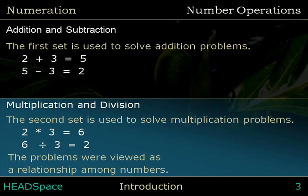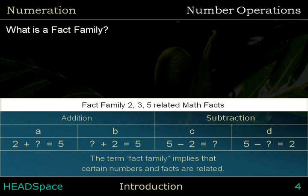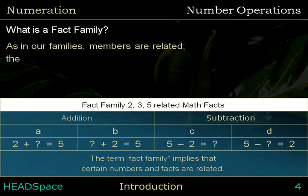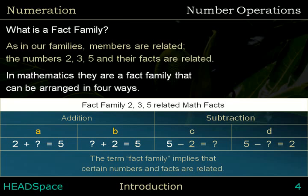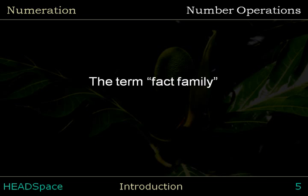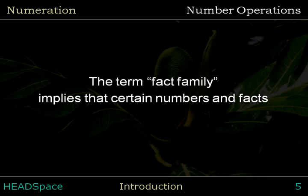The problems were viewed as a relationship among numbers. What is a fact family? As in our families, members are related. The numbers 2, 3, and 5 and their facts are related. In mathematics, they are a fact family that can be arranged in four ways. The term fact family implies that certain numbers and facts are related.